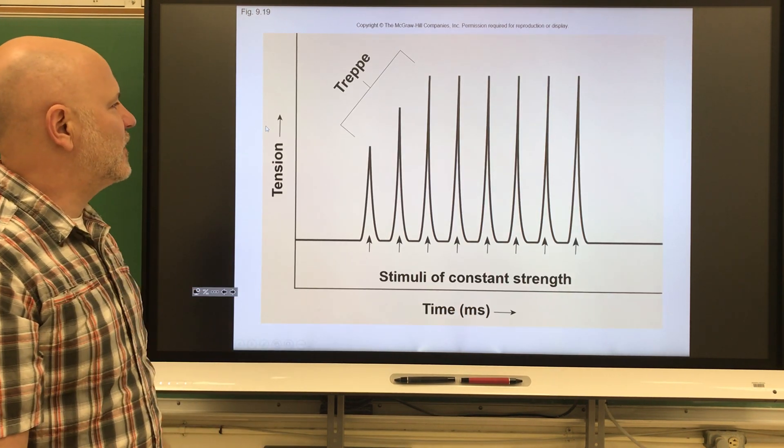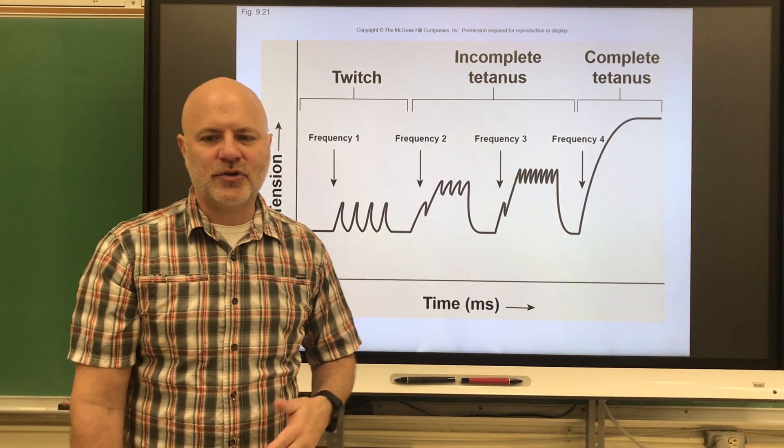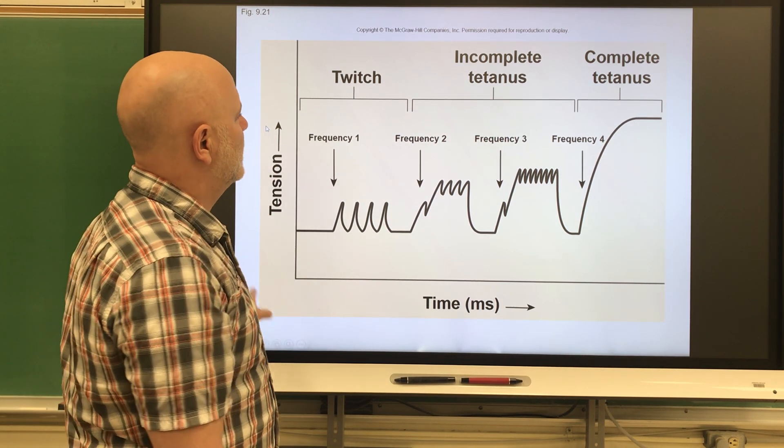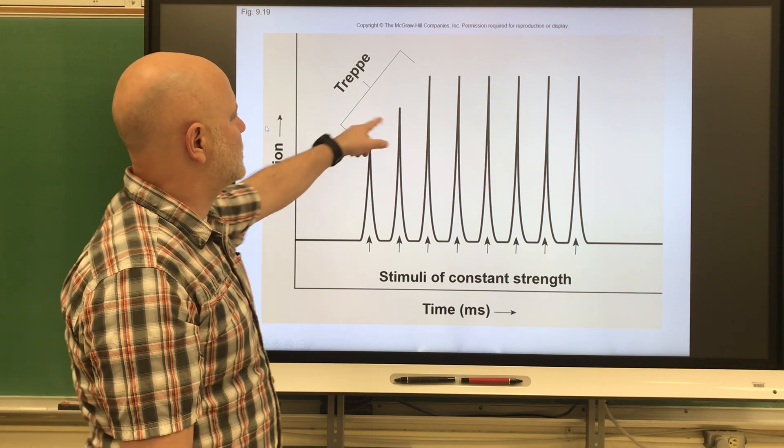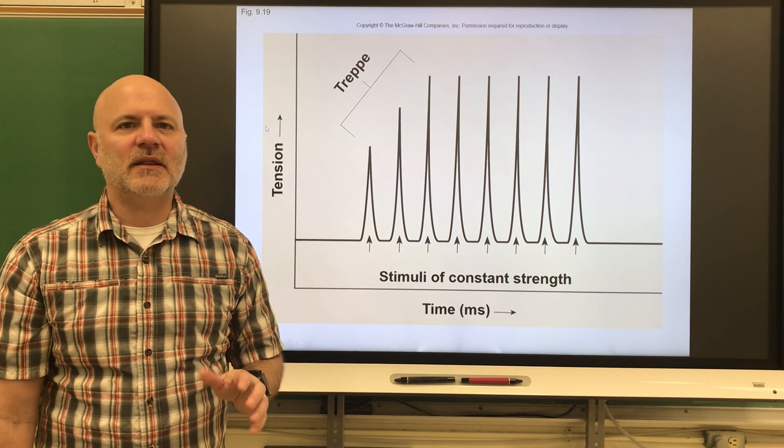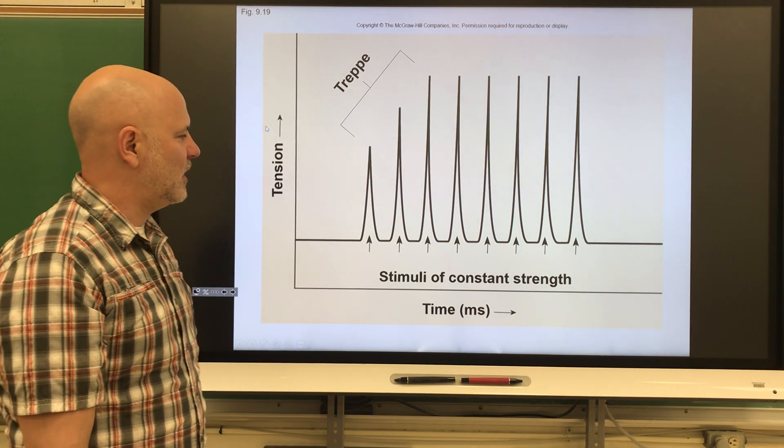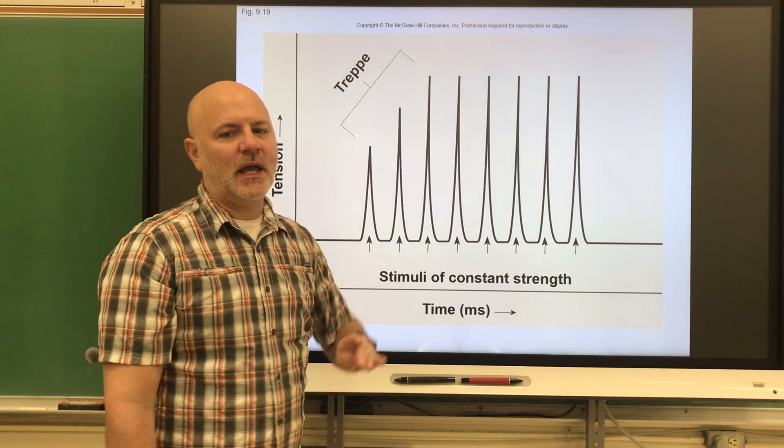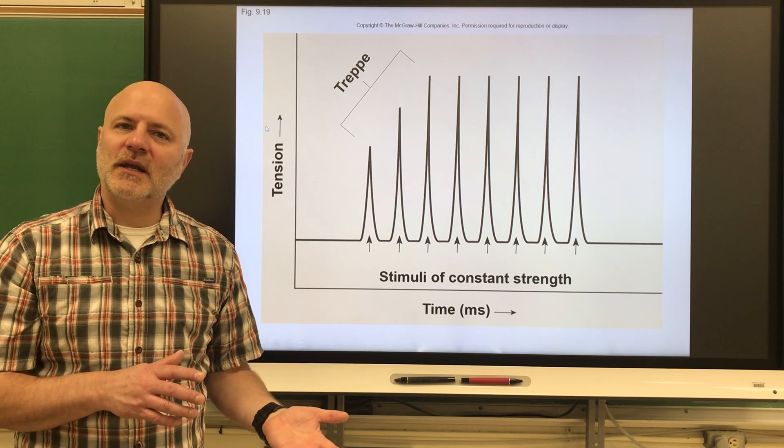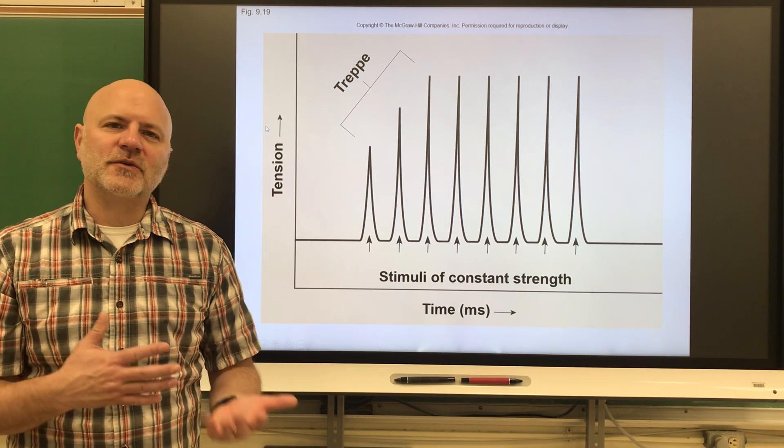One of the things you might have seen here is this thing called treppe or trep. This is a staircase pattern of increased strengths of contraction. We see that on this next picture here. This is even though the stimulus strength is the same, stimuli of constant strength, you're still going to get a stronger contraction. A couple of reasons for this: one is there is more heat available and our enzymes in our muscles work a little better there, and also there's more calcium available.